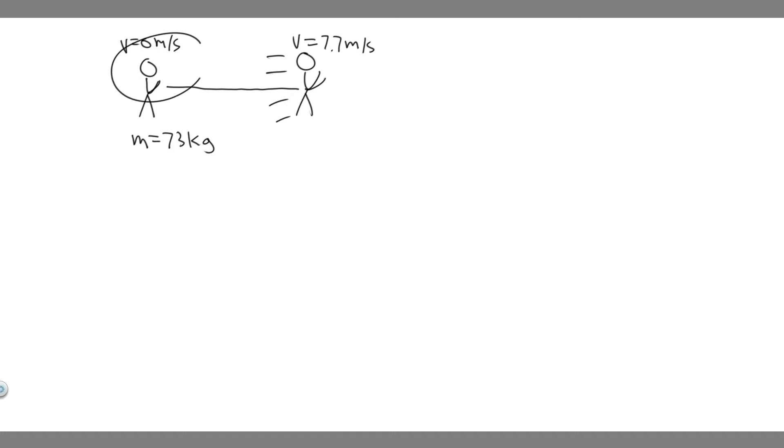So we have this runner at 0 meters per second, and they're going to run and reach a velocity of 7.7 meters per second. What we're trying to find is the work required to do this. So how are we going to solve this problem?